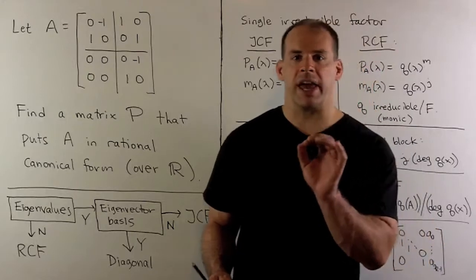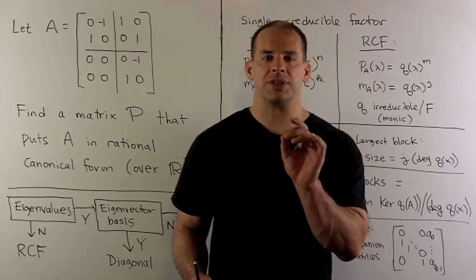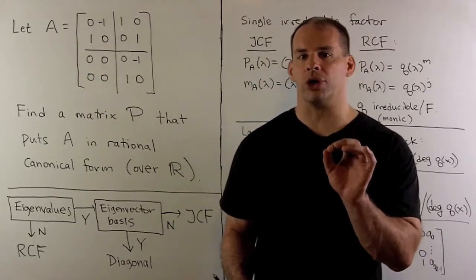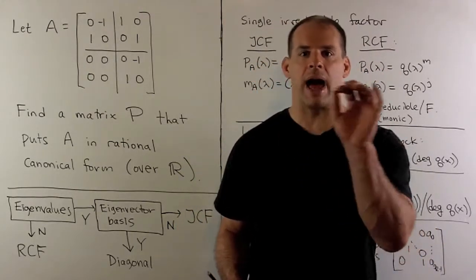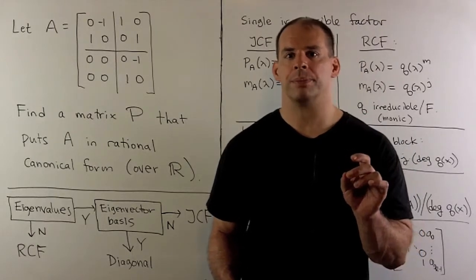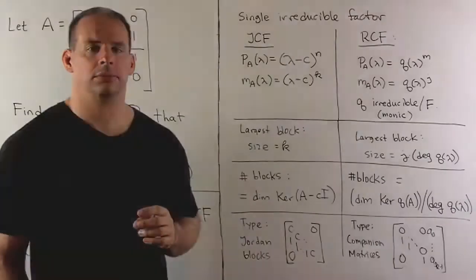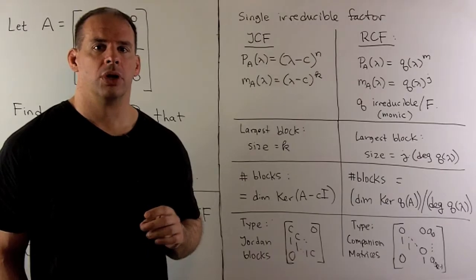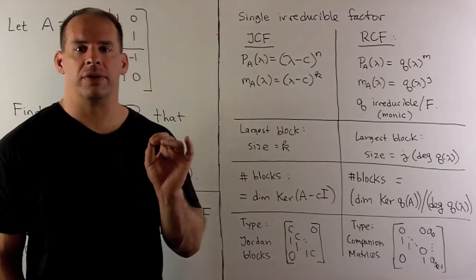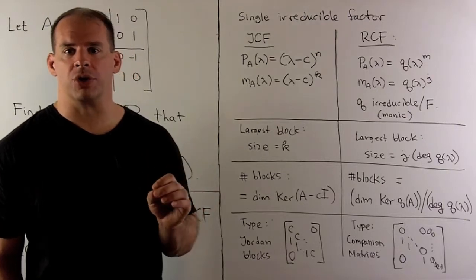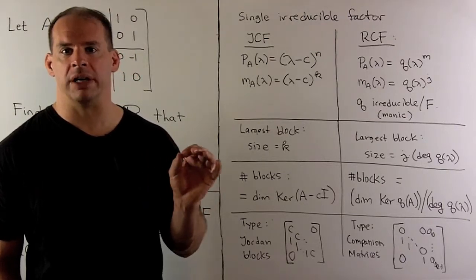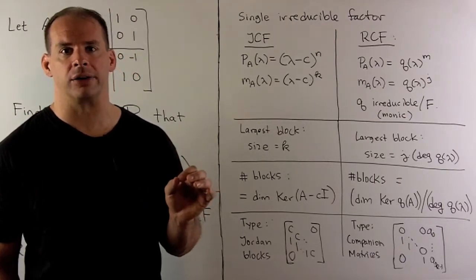For this case, we're going to consider rational canonical form when there's a single block. We just want to do the basics, and we'll only consider the case where the characteristic polynomial is a power of an irreducible factor.